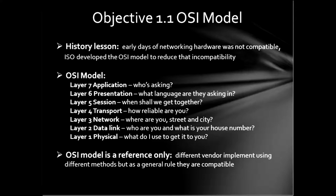Layer three is the network layer, and the network layer is logical addressing — basically where you are. Layer two is the data link, and that's actually made up of two sub-layers: the MAC and the LLC. That's basically who you are and what your address is. Layer one is the physical, and that deals with signaling methods and how data gets from one point to another. The OSI model is a reference only, and everybody implements it in a slightly different manner, but they all inter-operate because they all adhere to the standards.